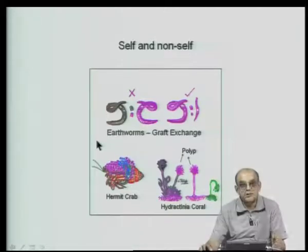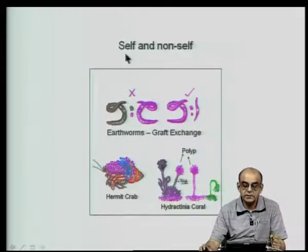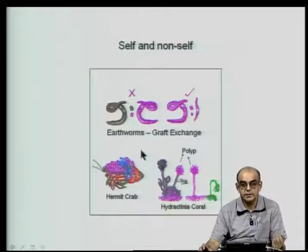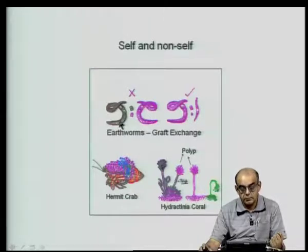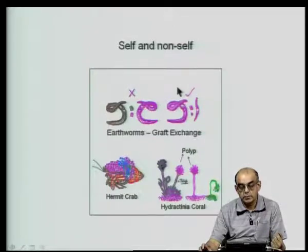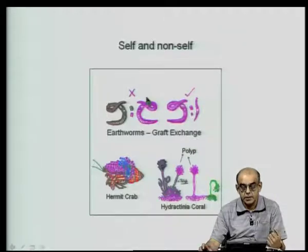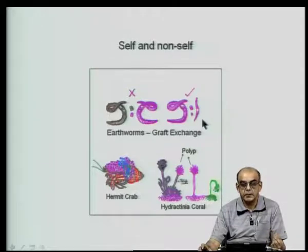The distinction between self and non-self is very evident in earthworms, where a graft exchange gives results similar to the graft rejection reactions seen in higher mammals. If we take a piece of skin from one locality where earthworms are found and graft it onto earthworms from a different locality, there ensues a rejection reaction, as opposed to the acceptance of that skin graft within earthworms from the same locality.